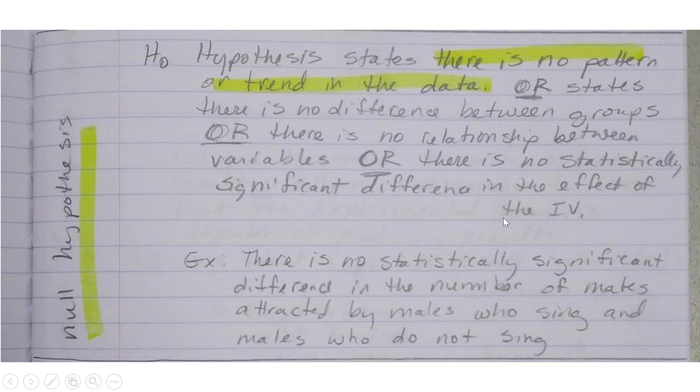Even though the numbers are different, it's not statistically significant. So we use this statement a lot, that there is no statistically significant difference. An example of a null hypothesis: there is no statistically significant difference in the number of mates attracted by males who sing and males who do not sing.